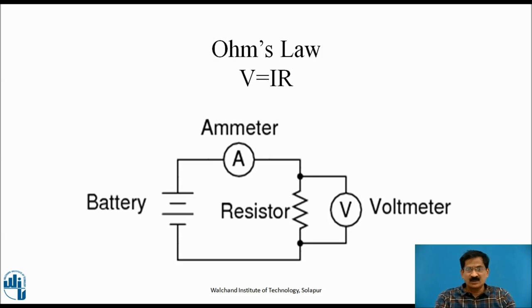Ohm's Law: The voltage across the conductor is directly proportional to the current flowing through that conductor. Mathematically, it is given by v equals i times r, where v stands for voltage, i for current, and r stands for resistance.